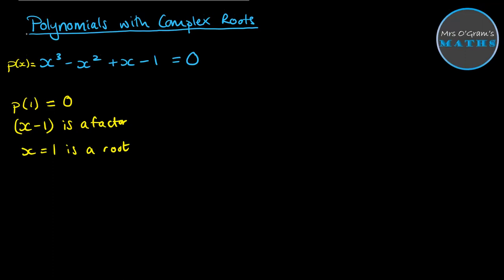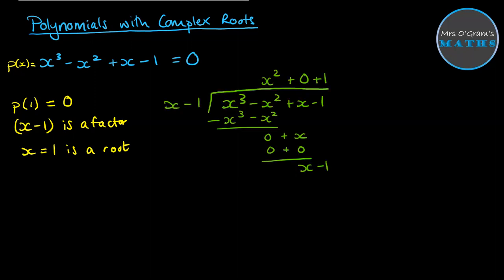So now if we divide that polynomial through by x minus 1, we can find the quadratic factor and then solve that too. So there's the result of the long division. You could also do it by algebraic juggling. And that's on a previous video if you need to go look up how to do that.